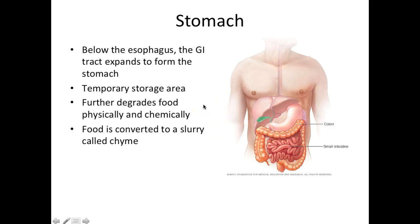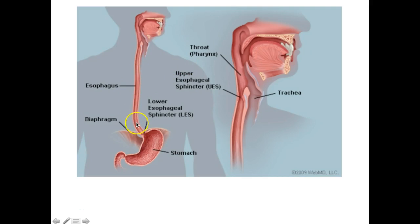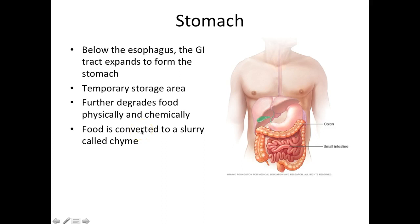If we follow the esophagus down, you can see that it pretty much expands to form this pouch called the stomach — so it is continuous. The stomach is more on the left side of the abdominopelvic cavity and more towards the upper portion. It is a temporary storage area that will further break down the food physically and chemically. Gastric juices here are going to break down the food chemically, making it ready for absorption.